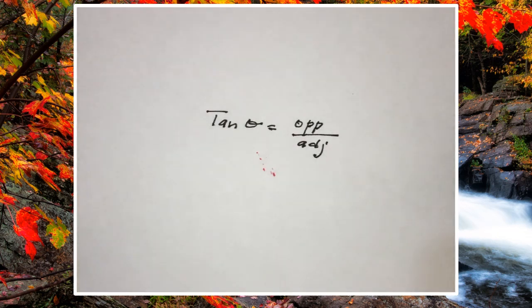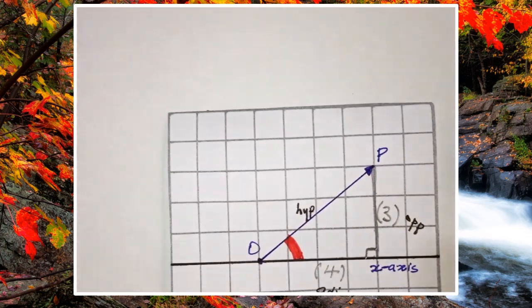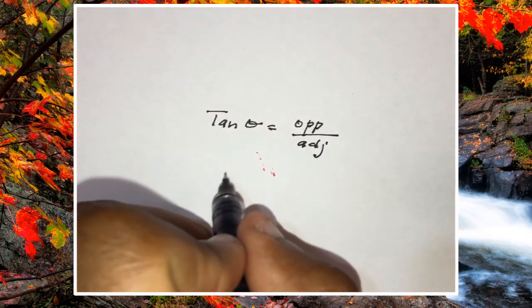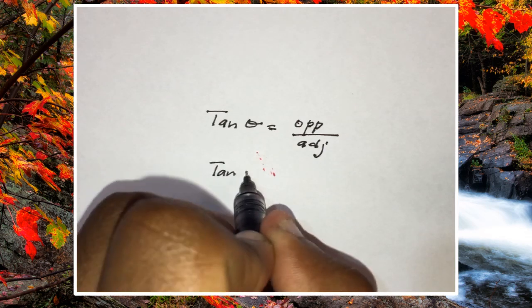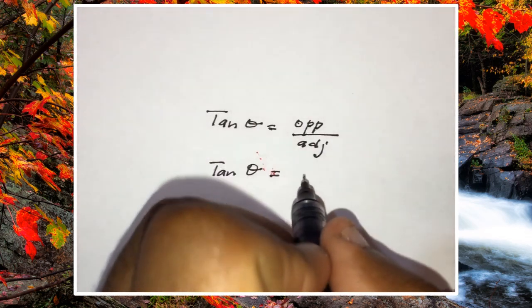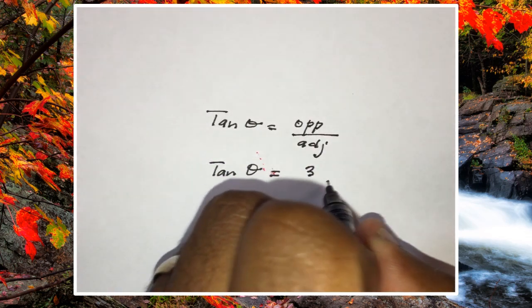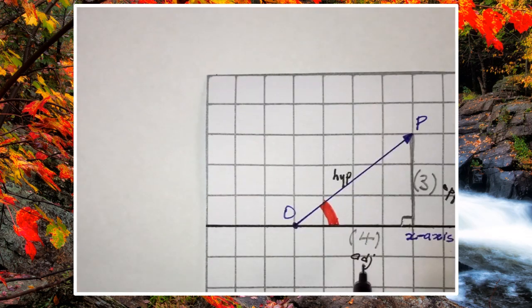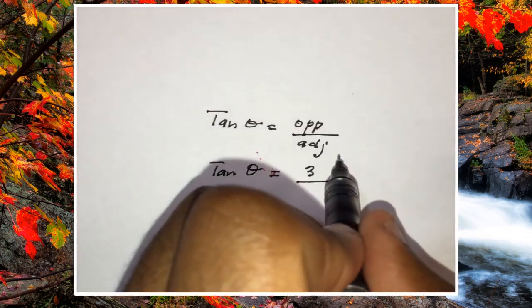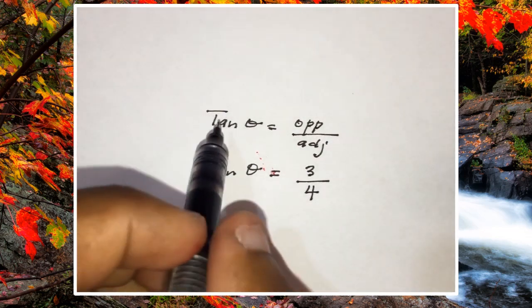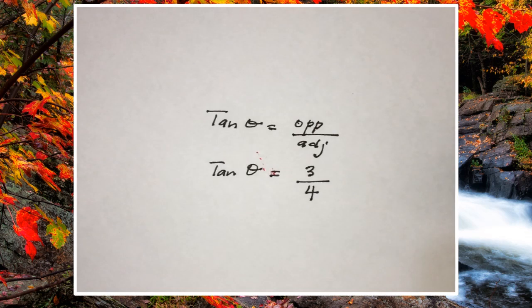Great. So you remember what the opposite was—it was three units. So it's going to be tan theta, that's the angle we're interested in, is equal to the opposite of three units divided by the adjacent of four units.